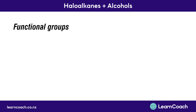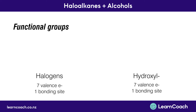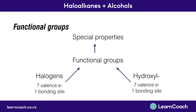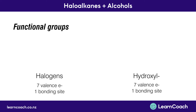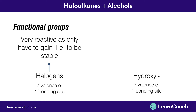Lastly, we'll talk about functional groups. In haloalkanes we have halogens, and in alcohols we have hydroxyls. Both are called functional groups because they have special properties due to their unique positioning on the periodic table. Halogens are very reactive because they only need to gain one electron to be stable, like the noble gases. Since halogens will do everything they can to gain that electron, this makes them highly reactive, and it also makes haloalkanes very reactive.